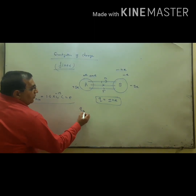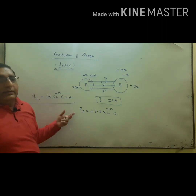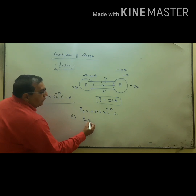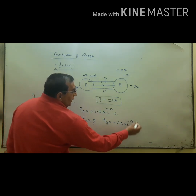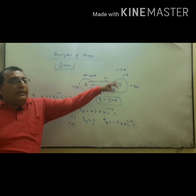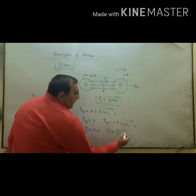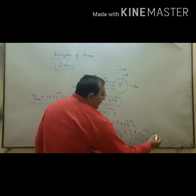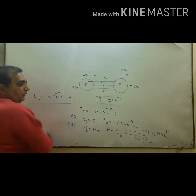Example: suppose the charge on A is +3.2 × 10⁻¹⁴ coulomb. First question — what is the charge on B? The charge on B is the same amount of negative charge: −3.2 × 10⁻¹⁴ coulomb. Second, calculate how many electrons are transferred from A to B: N = Q/e = (3.2 × 10⁻¹⁴) / (1.6 × 10⁻¹⁹) = 2 × 10⁵. So the number of electrons transferred is 2 × 10⁵.